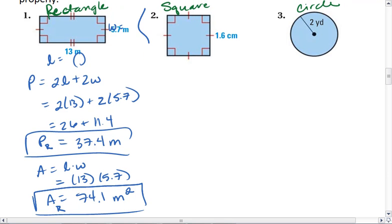Now let's try the square. The perimeter of a square is 4S. Here, our side length is 1.6. I can substitute in 1.6 for S, giving me 4 times 1.6.